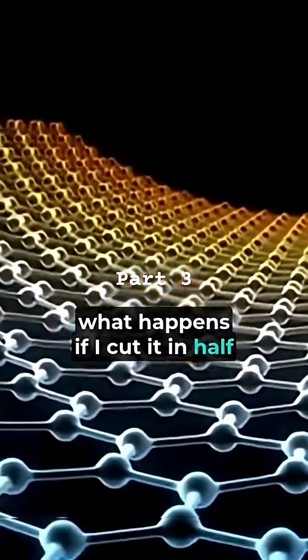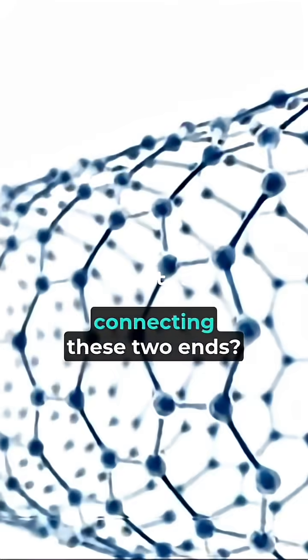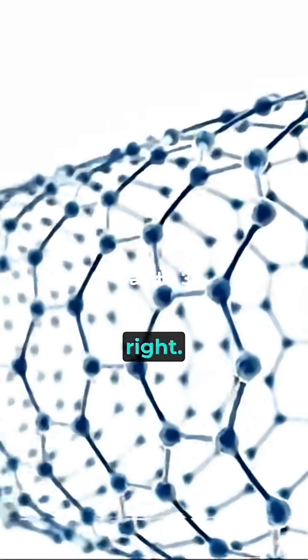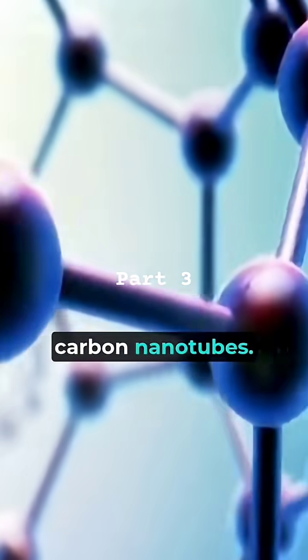But then someone said, what happens if I cut it in half and then make carbon fibers connecting these two ends? Then I can make a carbon strip that has the strength that this original shape had. And those are called carbon nanotubes.